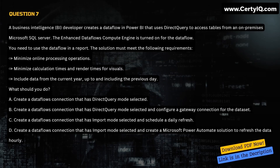Question 7. A business intelligence developer creates a dataflow in Power BI that uses Direct Query to access tables from an on-premises Microsoft SQL Server. The enhanced dataflow compute engine is turned on. You need to use the dataflow in a report. The solution must minimize online processing operations, minimize calculation times and render times for visuals, and include data from the current year up to and including the previous day. What should you do? A. Create a dataflow connection with Direct Query mode selected. B. Create a dataflow connection with Direct Query mode selected and configure a gateway connection for the dataset. C. Create a dataflow connection with import mode selected and schedule a daily refresh. D. Create a dataflow connection with import mode selected and create a Power Automate solution to refresh the data hourly. Correct answer is C.